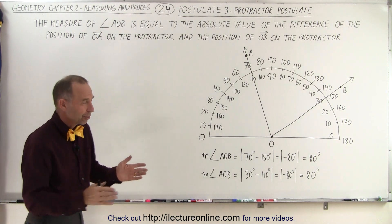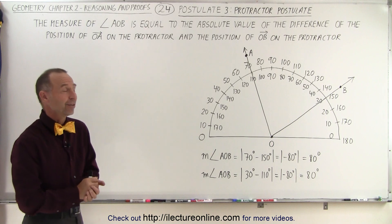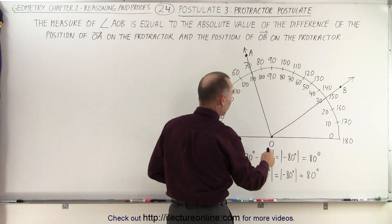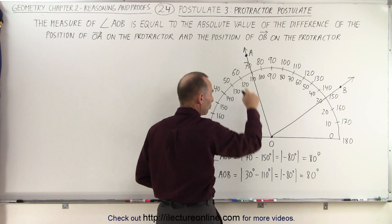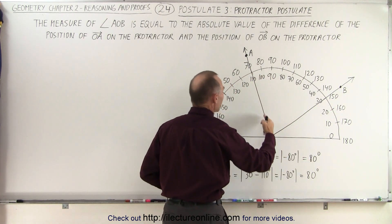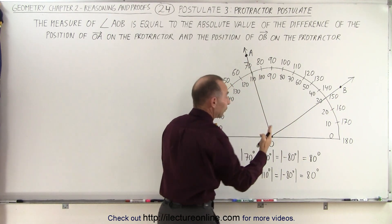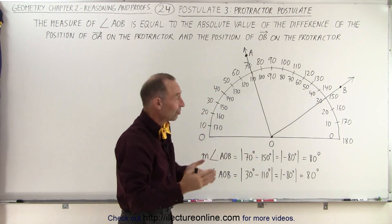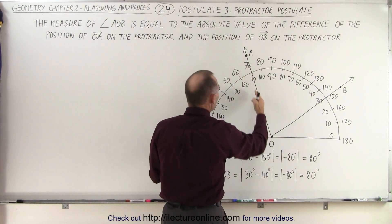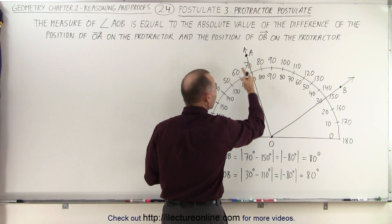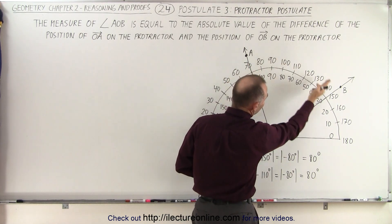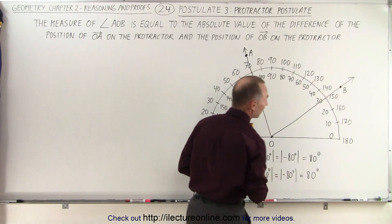There's nothing like a good picture to show you what that actually means. So here we have a protractor. We have a ray from O to A, a ray from O to B, and notice that it crosses the protractor here, and of course it depends upon which side you start. If you start from the left, this ray will have a measurement of 70 degrees over here, and the ray OB will have a measurement of 150 degrees over here.